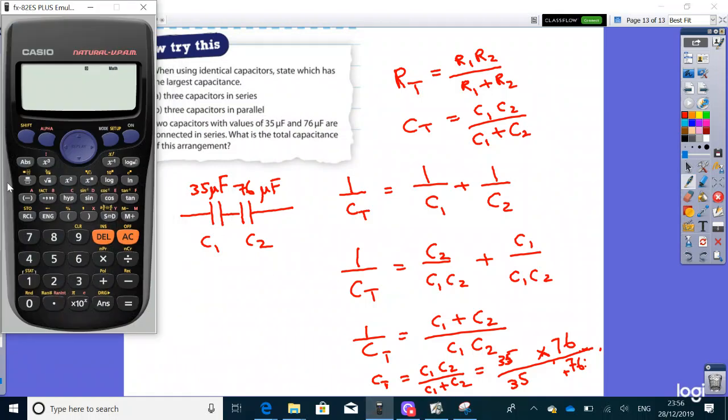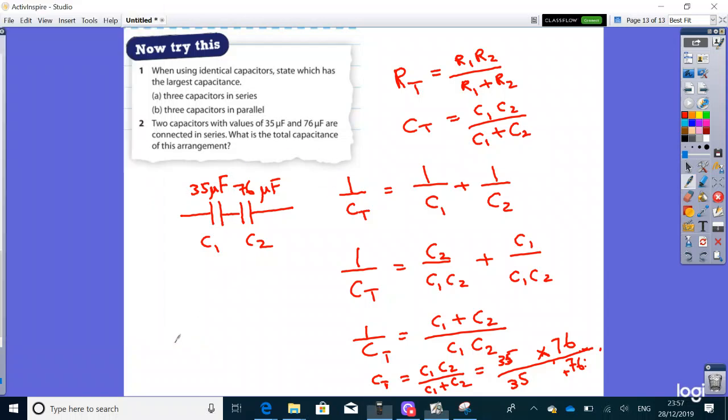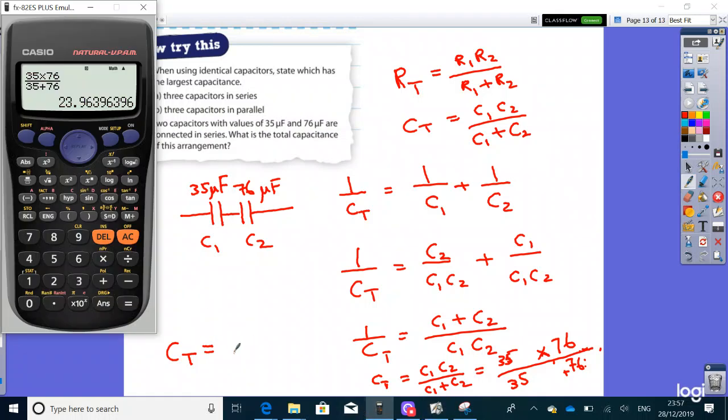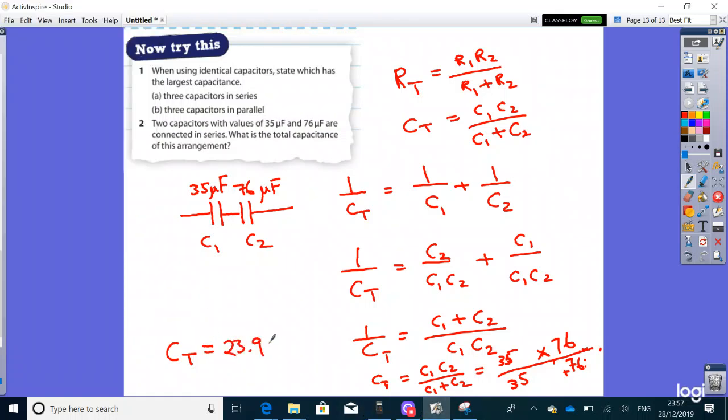Putting that in the calculator, remember it's multiplication at the top because the reciprocal has flipped the fraction. So 35 times 76 divided by the sum. Double-check you have the numbers correct—sometimes people accidentally type the wrong digit. That comes to 23.96 microfarads. There we are.